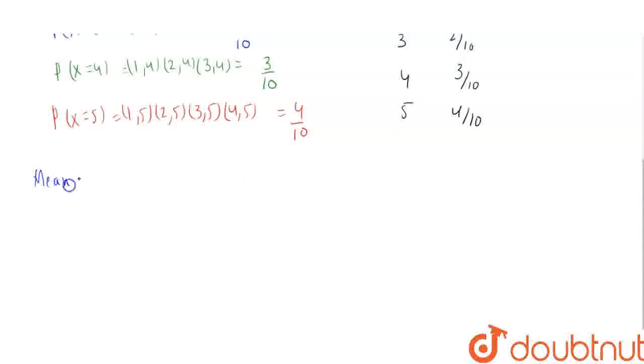Mean of X is equal to summation xi into fi. That is 2 into 1 by 10 plus 3 into 2 by 10 plus 4 into 3 by 10 plus 5 into 4 by 10.